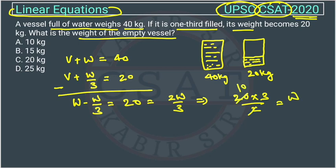This will cut, this 10. So, this will be 30. So, water weight is 30. If water weight is 30, the vessel weight will be how much? 10, because the total weight is 40.